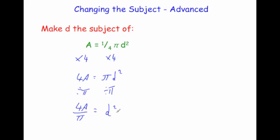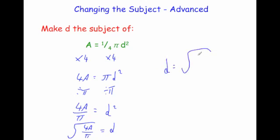Now we want to get rid of the squared, so we do the opposite to both sides — that's the square root. So the answer is the square root of 4a over pi equals d, or written as d equals the square root of 4a over pi. If you've got a question with a fraction, it's useful to choose a suitable number to multiply through by.